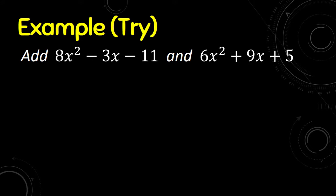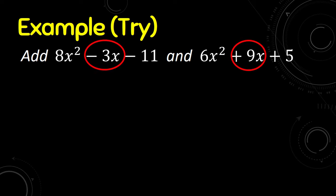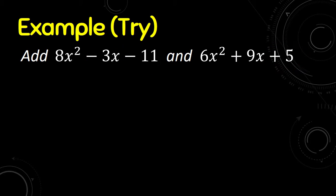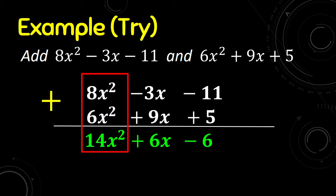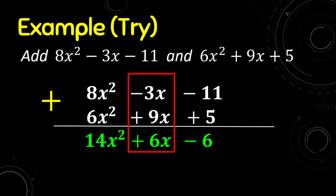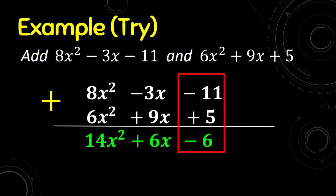Let us try this one. I'll give you 5 seconds to mentally calculate this example. The like terms are 8x² and 6x², negative 3x and 9x, and negative 11 and 5. Writing it vertically: 8 plus 6 is 14x², 9 plus negative 3 is positive 6x, and negative 11 plus 5 is negative 6.